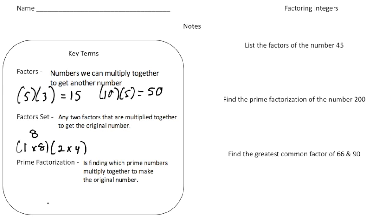Prime factorization is finding which prime numbers multiply together to make the original number. For example, if we have the number 15 and break it apart to 5 times 3, both 5 and 3 are prime factors. So 5 times 3 would be the prime factorization of 15.